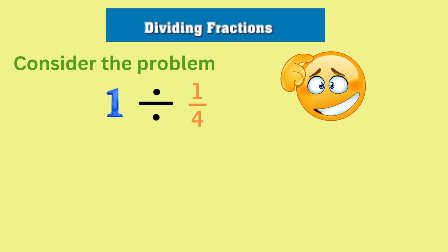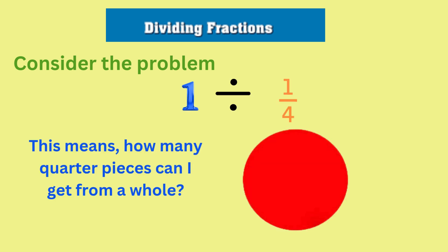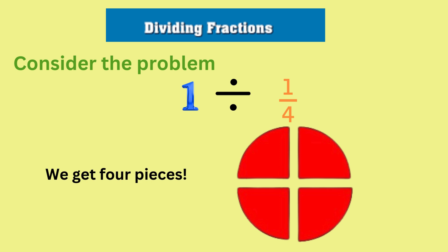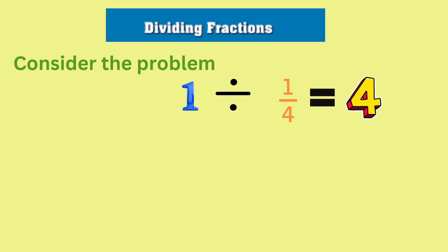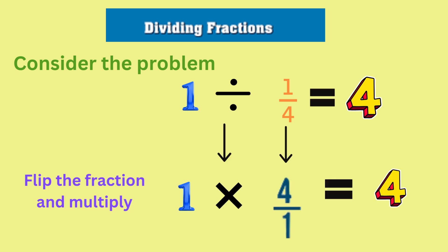How about one divided by a quarter? This means, how many quarter pieces will I get if I divide one whole into quarters? As you can see, you will get four pieces. This means that one divided by a quarter is four. Again, you can reciprocate the fraction and multiply to get the number of quarter pieces.